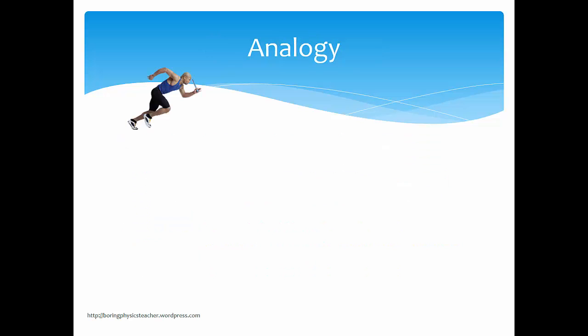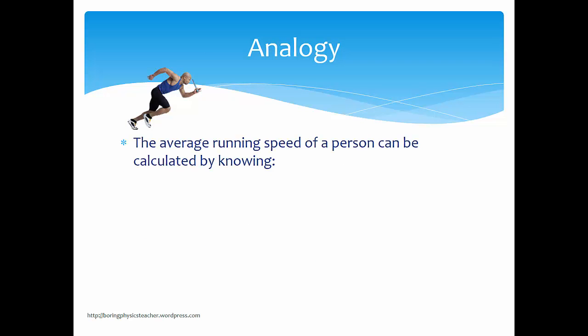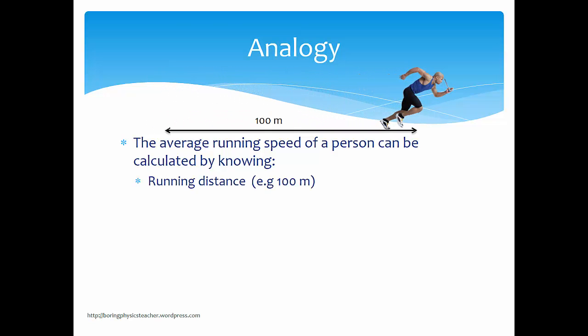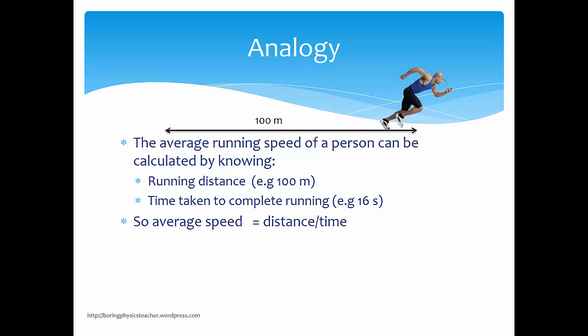I'll use an analogy to help you understand. The average speed of a person can be calculated by knowing the distance he has run — in this case, 100 m — and the time taken to complete the run, let's say 16 seconds. So the average speed is distance divided by time: 100 divided by 16 gives 6.25 m per second.